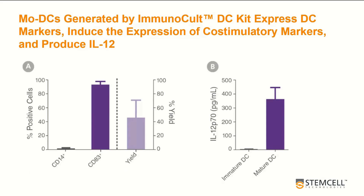Monocyte-derived dendritic cells generated by the ImmunoCult DC kit express markers and cytokines important for priming T-cell responses, such as co-stimulatory molecules shown on the left graph, and IL-12 production shown on the right graph.